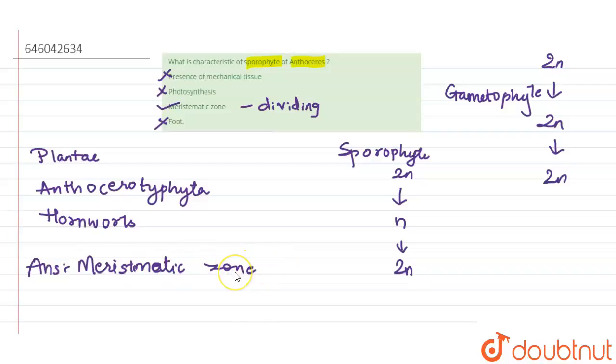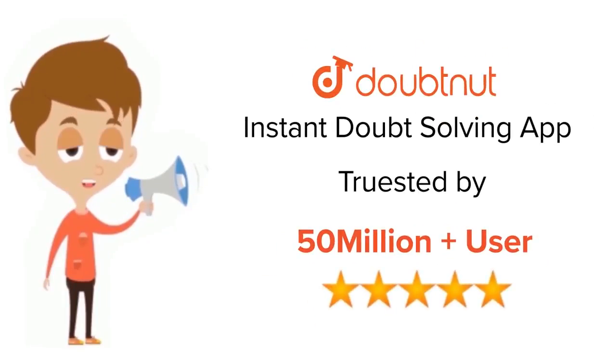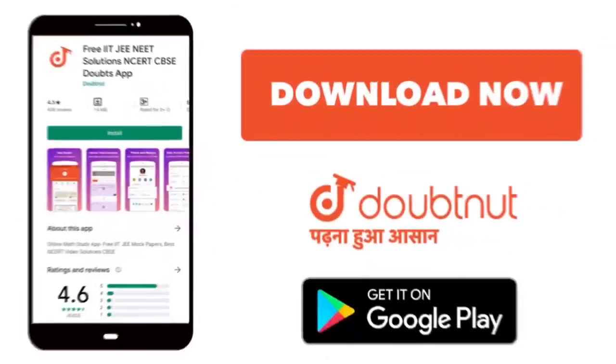So the characteristic of the sporophyte of anthoceros is meristematic zone. I hope this has cleared it out. Thank you. For class 6 to 12, IIT-JEE and NEET level, trusted by more than 5 crore students, download Doubtnut app today.